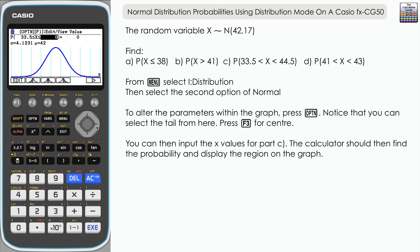Then navigate to the upper bound, which is 44.5, and execute. You can see it's shaded the area on the graph for us and given us the probability 0.7082.